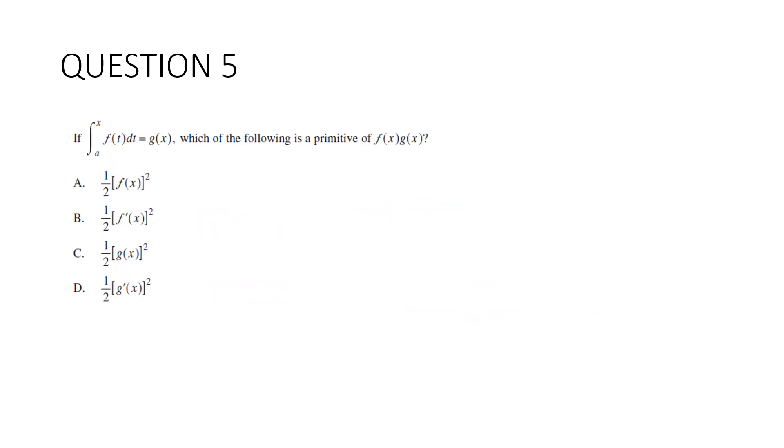Question 5. If the integral between a and x of f(t)dt is equal to g(x), which of the following is a primitive of f(x)g(x)? If we want a primitive of this, that means the derivative of each of these is going to be equal to that. So I'm going to start off by differentiating these with respect to x, just using the chain rule.